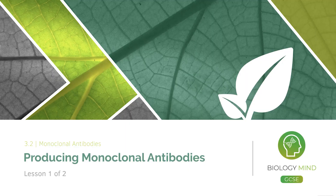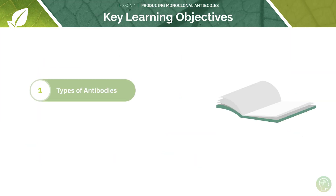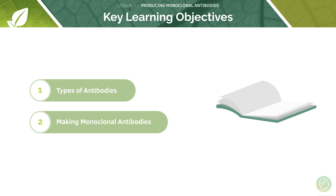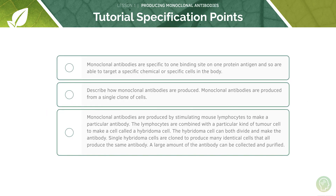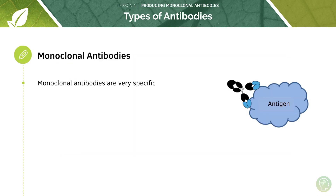Welcome to tutorial one of two on monoclonal antibodies. In today's tutorial we're going to be looking at the types of antibodies that there are - monoclonal or polyclonal - and then we're going to look at the process by which we can make monoclonal antibodies. This can occur naturally, but also we can utilise this clinically by making them artificially and then using monoclonal antibodies in treatment.